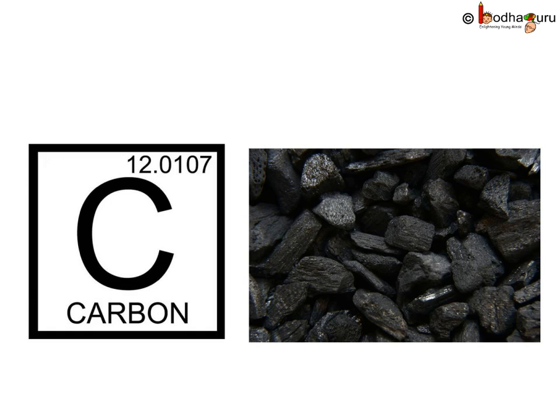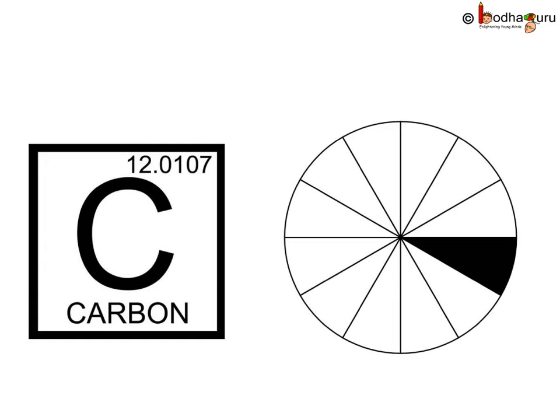In 1961, it was decided to use carbon-12 atom as the standard reference to measure atomic masses. The mass of carbon atom is divided into 12 parts. The number of times an atom of an element is heavier than one-twelfth part of atomic mass of carbon-12 is called its atomic mass.